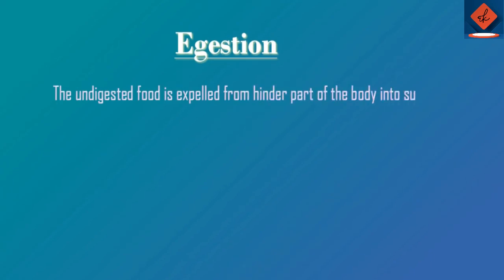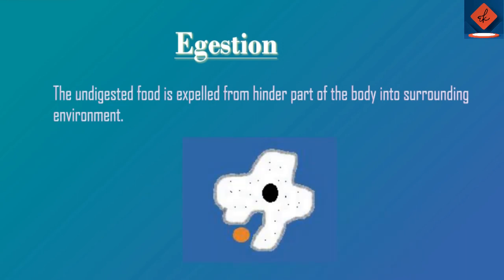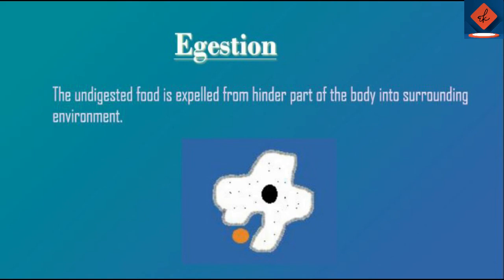The undigested food is expelled from the hinder part of the body into the surrounding environment — this step is called egestion. That is all about nutrition in amoeba. Thanks for watching the video. Stay home, stay safe.